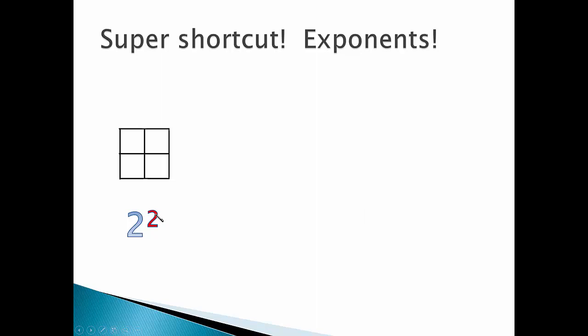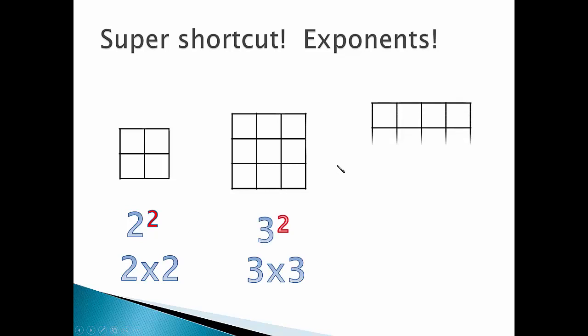When we raise something to the second power or square it, we imagine a square with the base as the length and the width. We multiply 2 times 2 or 3 times 3 or 4 times 4. We call it 4 to the second power or 4 squared.